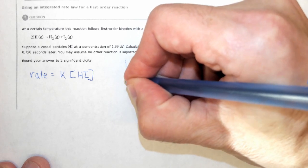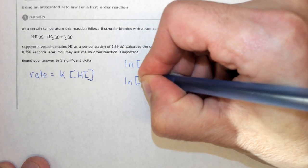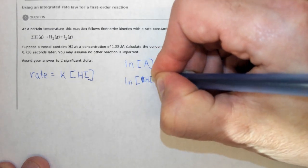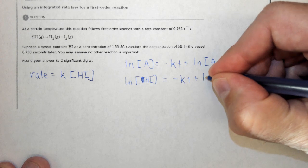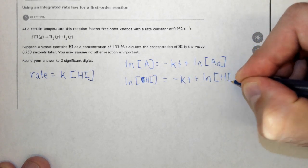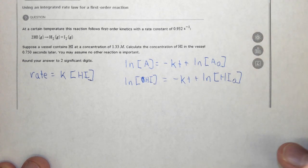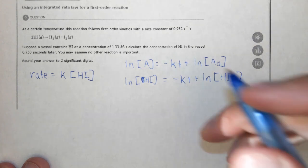So in this case, it's ln of the concentration of HI at some time equals negative Kt plus ln of concentration HI₀, the initial concentration of HI. So, plugging in...